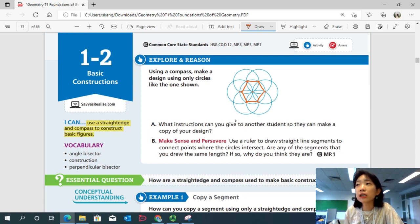So what instructions can you give to another student so they can make a copy of your design? How would you tell another student who cannot see this design to construct it? Does it matter how large you make the circle? How can you match the diagram exactly?